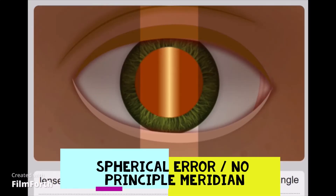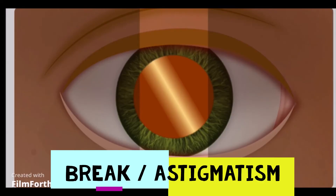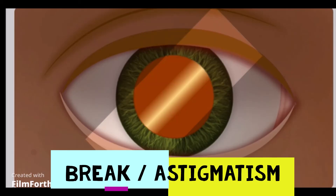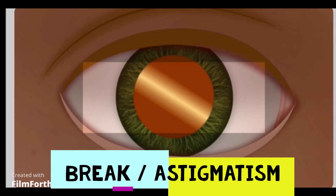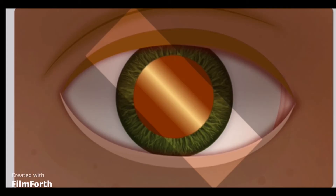In this clip you can see that in a spherical error all meridians have the same power and no matter where the streak is placed the reflex is always parallel. Now for this astigmatic patient: first the streak is placed at 90 degrees, but the reflex appears bent away. At 45 degrees the reflex is perfectly aligned — meaning one principal meridian is at 45. At 180 degrees it is not aligned, but at 135 degrees the reflex aligns perfectly. So the two principal meridians here are at 45 and 135 degrees.